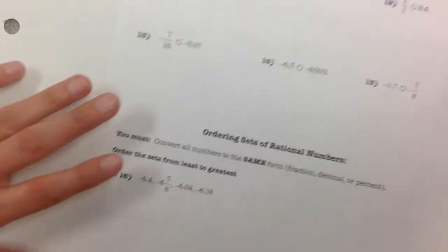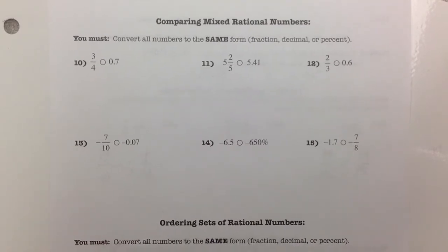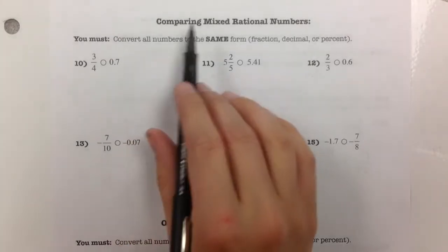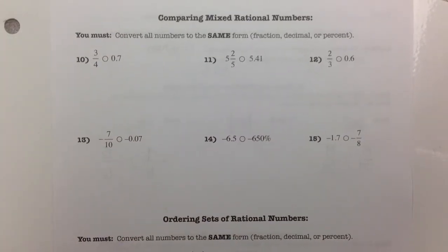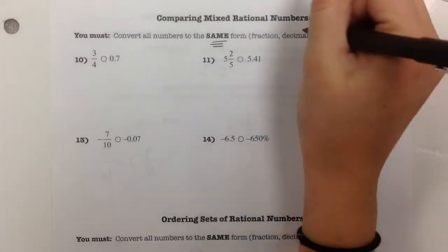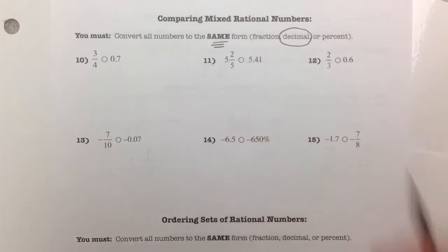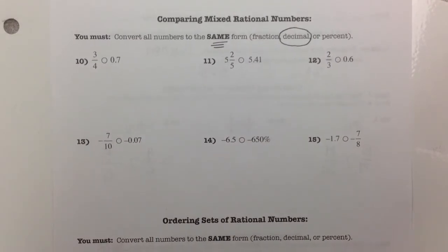Now let's look at the tricky part: comparing mixed rational numbers — decimals to fractions, fractions to percents, and so on. When comparing mixed rational numbers, we have to convert all the numbers to the same form. I think it's easiest to convert everything to a decimal. Fractions can be hard to find common denominators for, and since we're letting you use a calculator, it should be easy to convert.